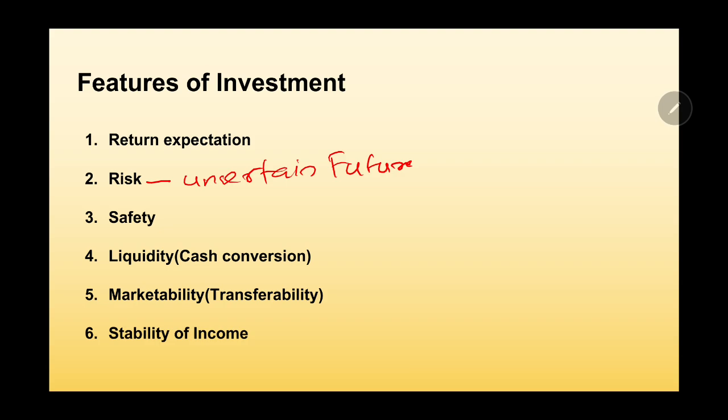Then, stability of income. This is also an additional feature expected of an investment. Whether you have a piece of land, a building, or a car — unless and until you use it for a certain purpose, it does not generate income. All these things — dividends, interest, capital gains — are part of stability of income. You expect from this asset stable income and capital gains.